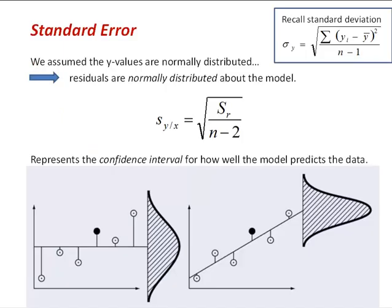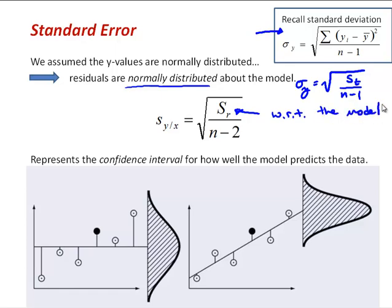Another measure of curve fit quality is called the standard error. This is similar to the standard deviation. Recall the standard deviation from the statistics video. So again, in the standard deviation, now that we've introduced ST, that would be the square root of ST over N minus 1. The standard error, we're going to assume that the residuals are normally distributed about the model, which is a reasonable assumption that follows from that assumption that the data would be normally distributed at any given X value. Then we can define the standard error as the square root of SR, where SR is now the sum of the squares of the residuals with respect to the model, divided by N minus 2.